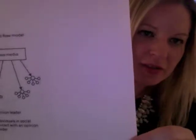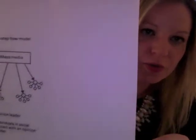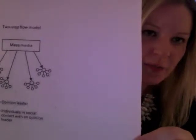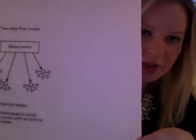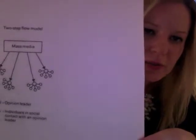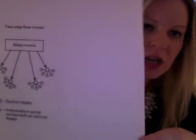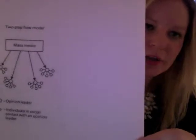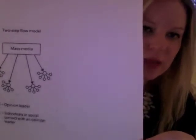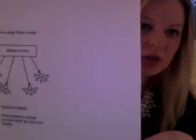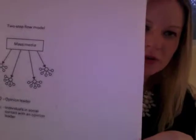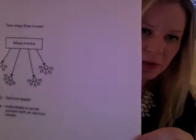I have an illustration of the two-step flow model. What you see here is the mass media — represented in the rectangle — influencing some nodes. You see a medium node and then that node influencing tinier nodes. Essentially, the two steps here go from the media to what we call opinion leaders, and then opinion leaders influence other people in the public.